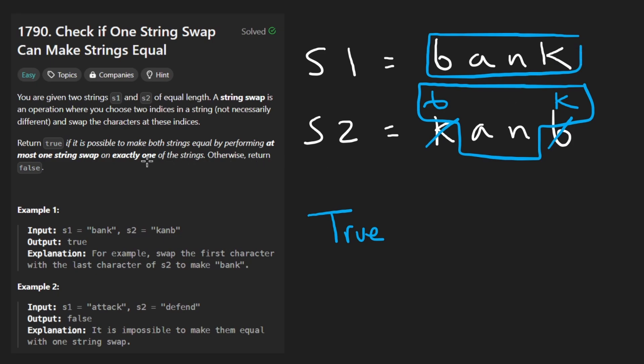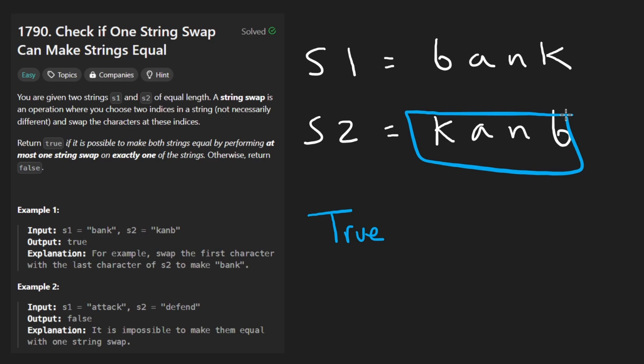Now even though they tell us we could perform the swap in either of the strings, it's not super difficult to realize that if we just performed the swap in this string and then we ended up making this equal to the other string. So if I put the b here and the k here, well we could have done the exact same thing the other way.